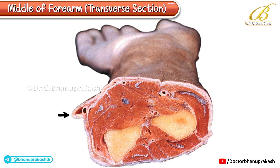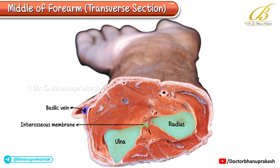Starting on the medial side, just beneath the skin, we can identify the basilic vein, a prominent superficial vein. If you observe the section closely, you'll see the two bones — the ulna on the medial side and the radius on the lateral side. Between them lies the interosseous membrane, which firmly connects the two bones. Remember, the thumb represents the lateral aspect, while the little finger marks the medial aspect.